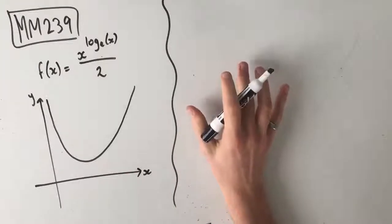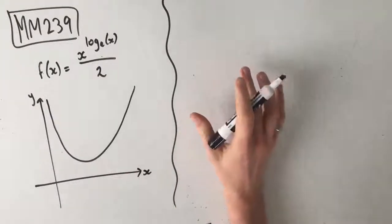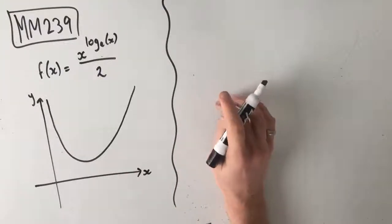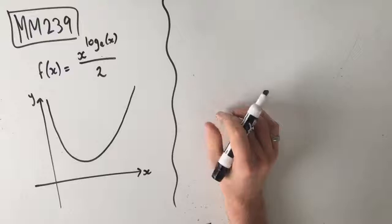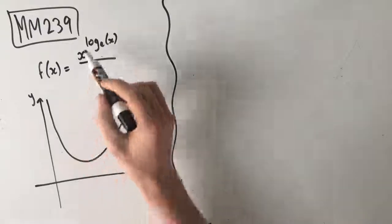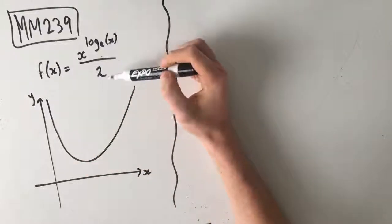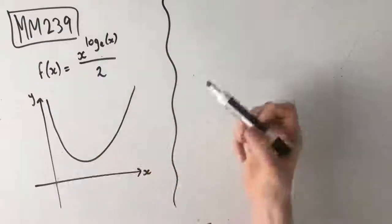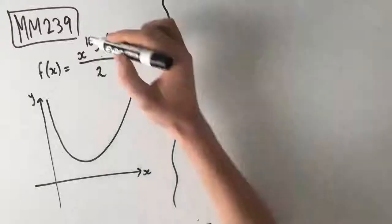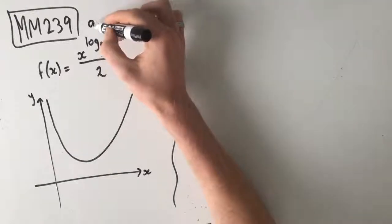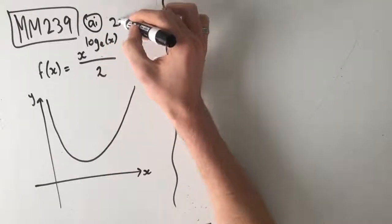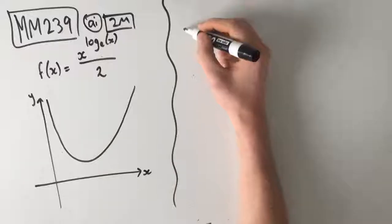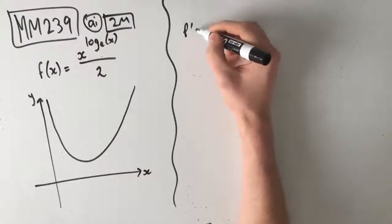Hey guys, welcome to question MM239 of the Maths Methods Fortify Study Guide. We've got this function f of x equals x to the power of log e of x over 2. We've got the graph, and our first part, AI, is a two-mark question, and it's asking us to find the derivative function f dash of x.